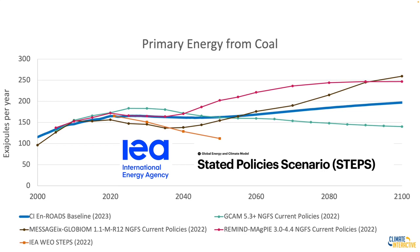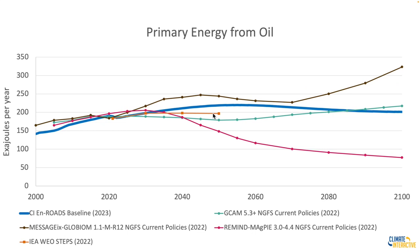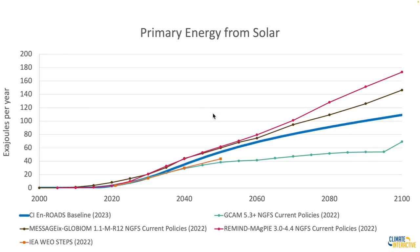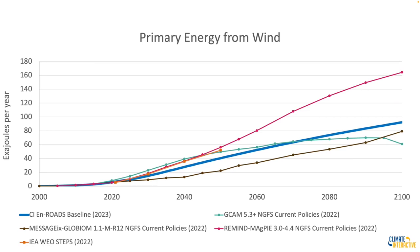When we look at energy sources, we can also draw from the International Energy Agency's World Energy Outlook stated policies scenario. The orange line is a true forecast — they think this is the forecast with stated policies going lower than our blue line, but you can see how we're within the range of the others. With oil, natural gas, solar, and wind, the En-ROADS baseline is in the middle of the pack — similar with wind, slightly lower than some and higher than Message Globiom in this case.